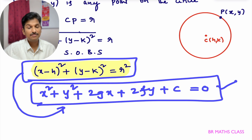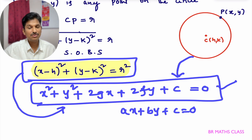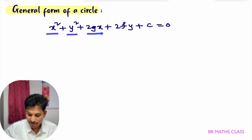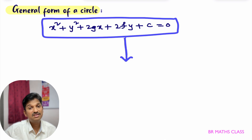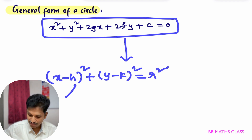Just as the general form of a straight line is ax + by + c = 0, the general form of a circle is x² + y² + 2gx + 2fy + c = 0. Now we will discuss the general form. It has one x² term, one y² term, one x term, one y term, and one constant term. If this equation represents a circle, what is its center and radius? We cannot say directly from this form — we need to convert it.